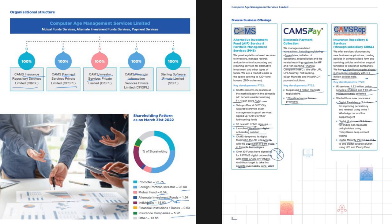Page eight provides more detail on the subsidiaries. CAMS is not only working in the mutual fund industry — it is also working in AIF and insurance, and these are growing. However, we still don't know exactly how much revenue is being generated from each of these businesses. One positive: they have signed almost 30-plus funds for the AIF and PMS segment, which is a good number. We should look at the AIF industry, the market share they're capturing, and seek answers on the non-core new businesses.